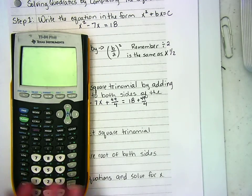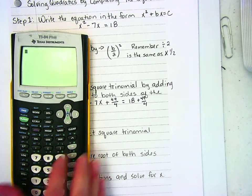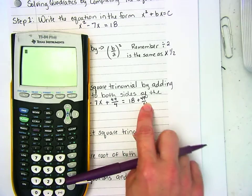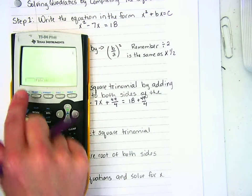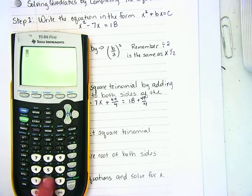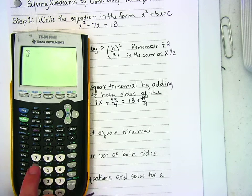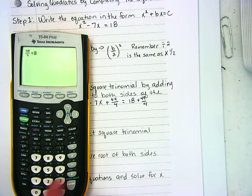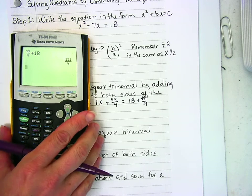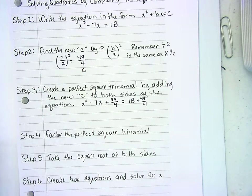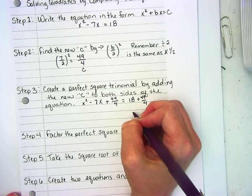I'm going to bring out the calculator on this one just so that I can go through it a little bit faster. I have 18 + 49/4, 49/4 added to 18. Hopefully this works out. Oh yes, that does work out nice and square. So now I have 121/4.